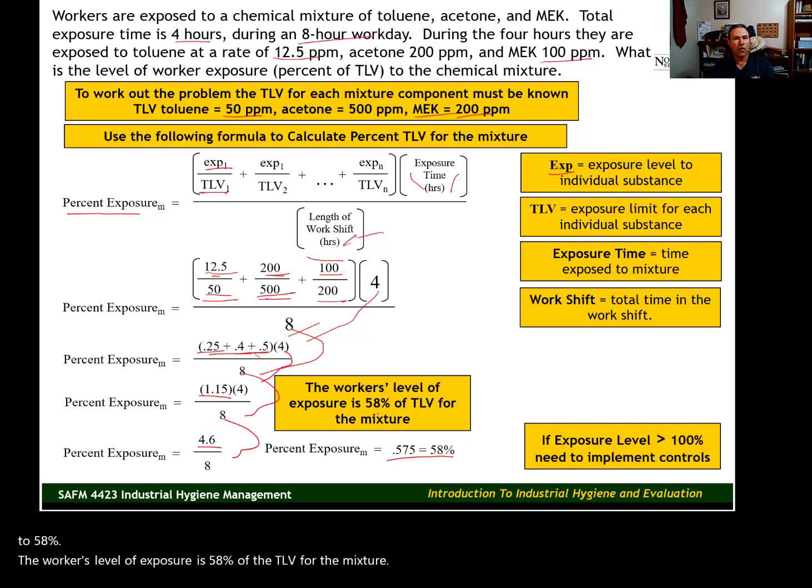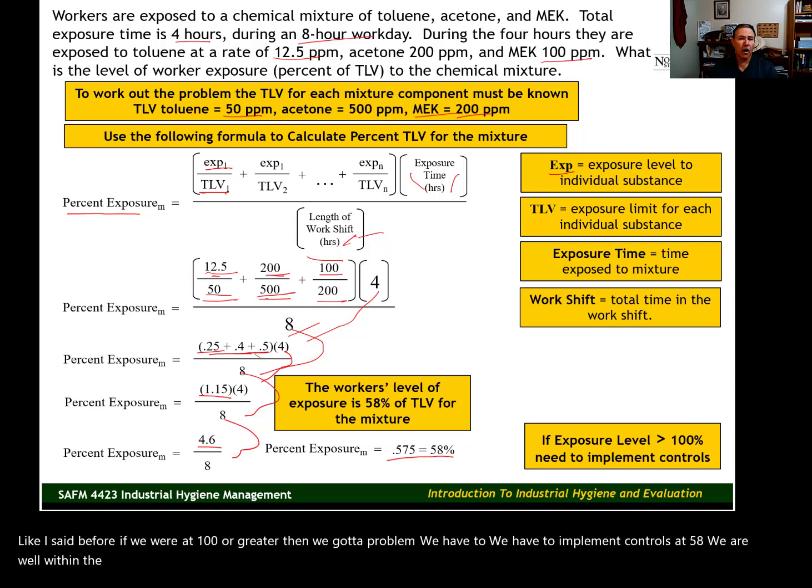Like I said before, if we were at 100% or greater, then we got a problem. We have to implement controls. At 58%, we are well within the TLV for this mixture. Our workers should be able to work in this environment continually without fear of physical harm, without fear of developing a disease.